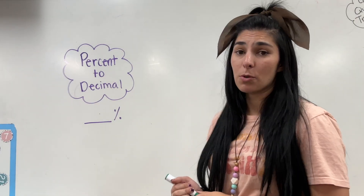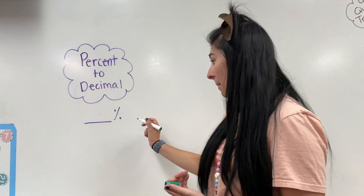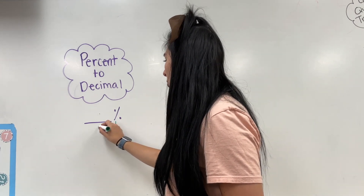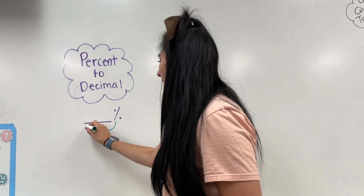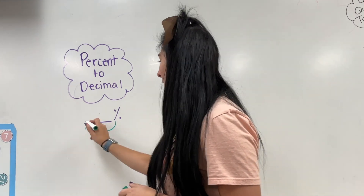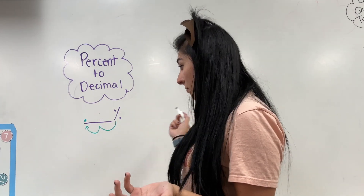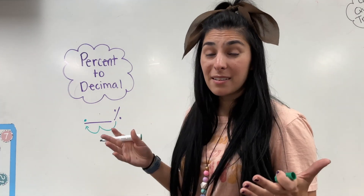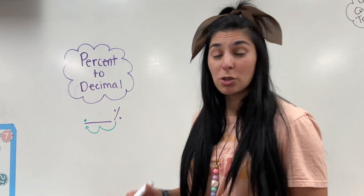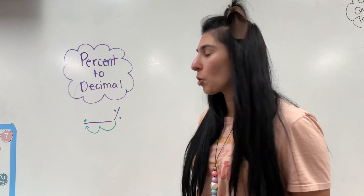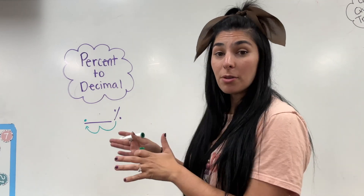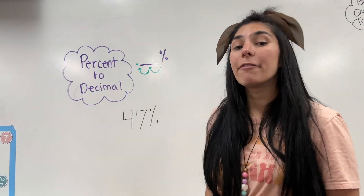Converting percents to decimals: I'm going to take my percent and jump two times to the front — that's where the decimal goes. Simple as that. It doesn't matter if there are three numbers, four numbers, two numbers, or one number — you're always jumping two times to the left.